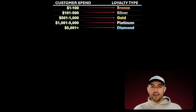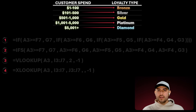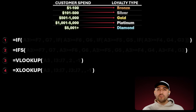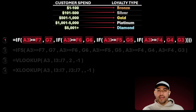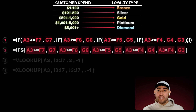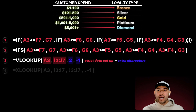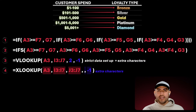And does it really need to be? Consider this: there's a bunch of ways to categorize customer spend into a loyalty type, like these four functions. Don't worry about the details here, that's not important. Instead, I want you to notice how each formula takes its shape. Visually, do you get a sense for their complexity? They're riddled with commas, parentheses, and extra characters. It's a recipe for a headache, but it's totally avoidable.